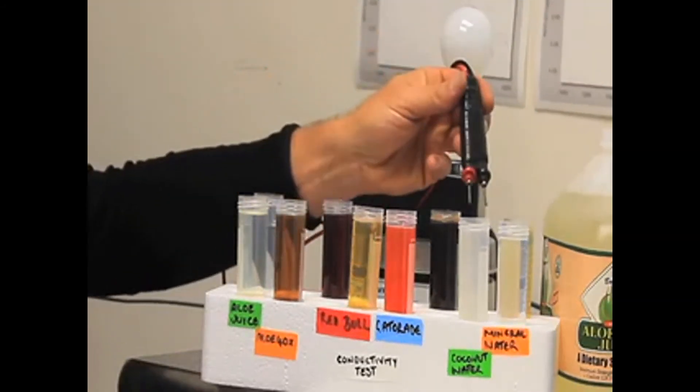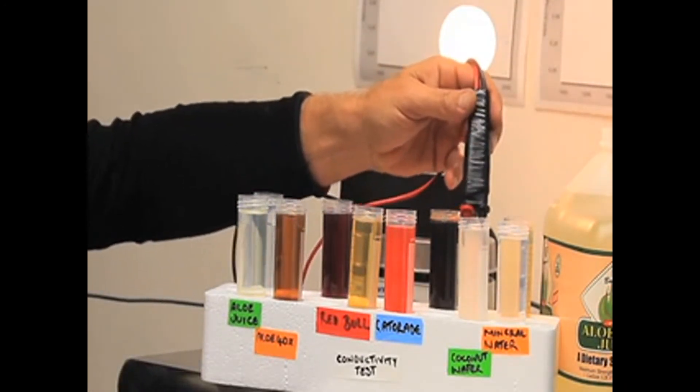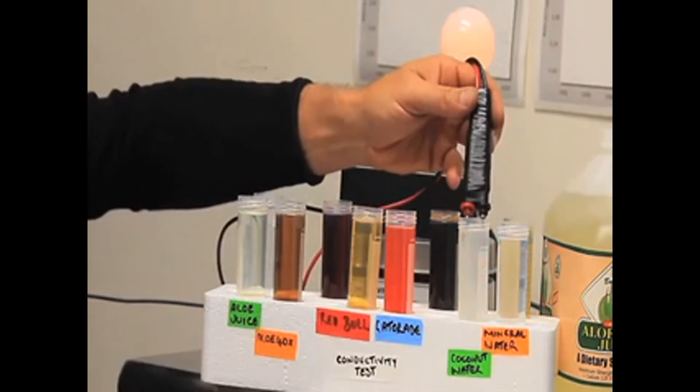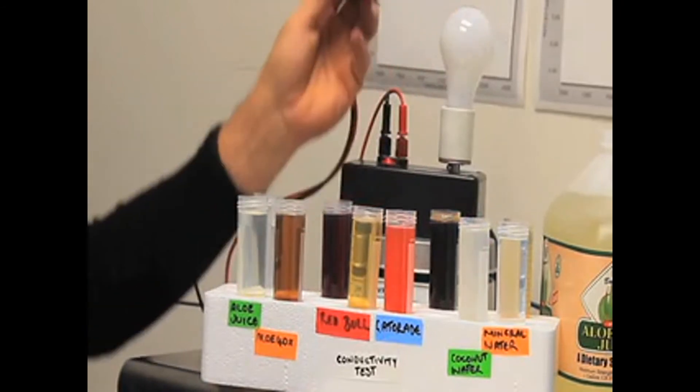Now look at coconut water—the water from a fresh coconut. There's so much conductivity within this liquid that it literally passes between these probes and lights the light bulb.